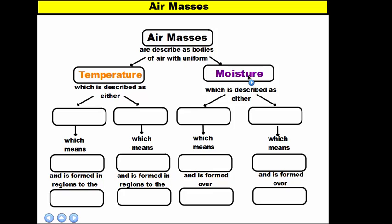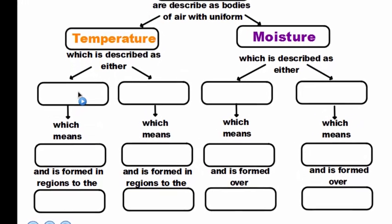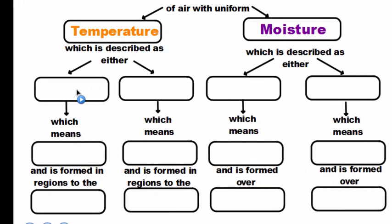There are different words to describe the temperature and the moisture levels in these air masses, and that's what we're going to go over in this chart here. These are the terms that meteorologists — the professionals that study the weather and deliver the weather to us — use. There are two words that we use to describe temperature: we can either describe the air as tropical air or polar air.